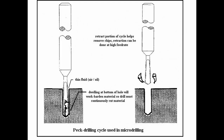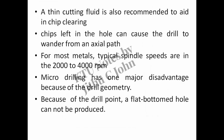The figure illustrates the working of peck drilling mode. Peck drilling, or interrupted cut drilling, is used to keep swarf from detrimentally building up when drilling deep holes, approximately when the depth of the hole is three times greater than the drill diameter. It involves plunging the drill part way through the workpiece — no more than five times the diameter of the drill — and then retracting it to the surface. This is repeated until the hole is finished. A thin cutting fluid is also recommended to aid in chip clearing. Chips left in the hole can cause the drill to wander from an axial path.